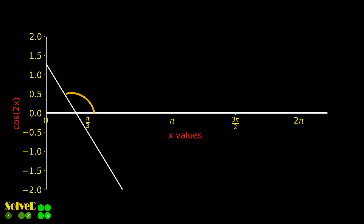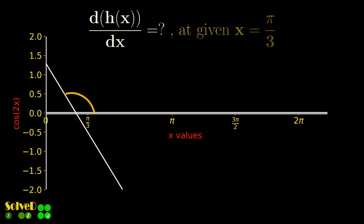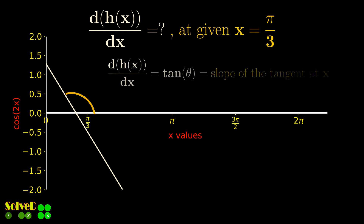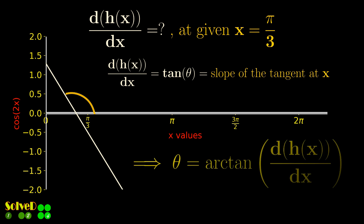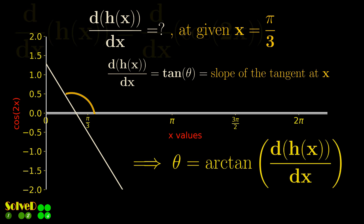Use differentiation and find the derivative of the given function at the given point. This gives the slope of the tangent line, also given by tangent theta.